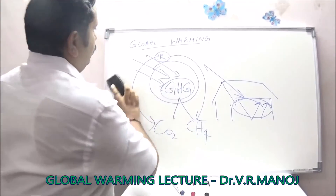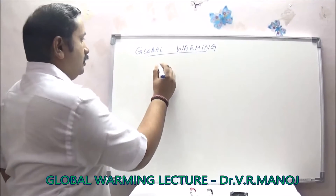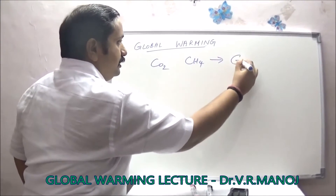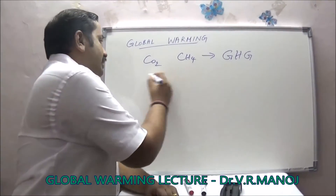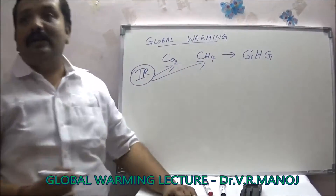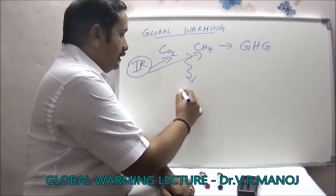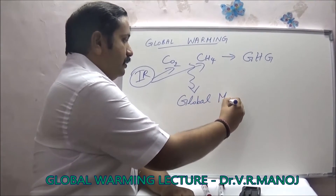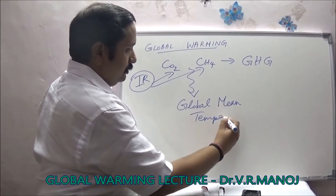There is a lot of carbon dioxide and a lot of methane — these are the most important greenhouse gases. When infrared radiation from the sunlight is incident on these greenhouse gases, they tend to vibrate and produce heat, which leads to a rise in global mean temperature.